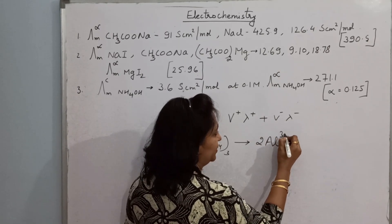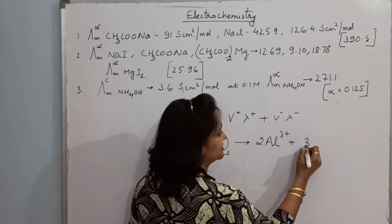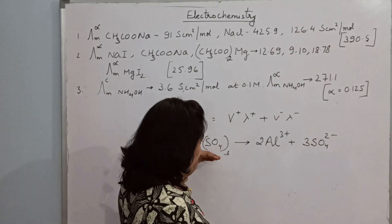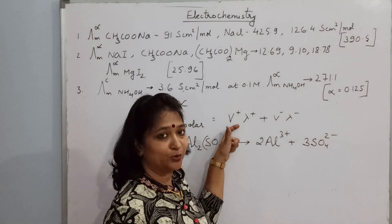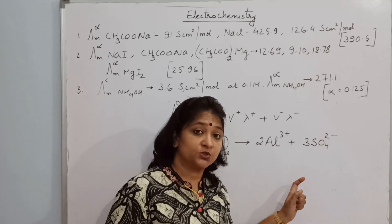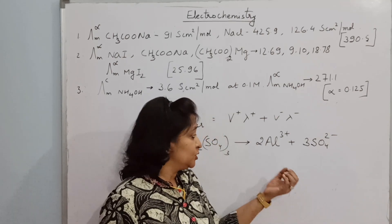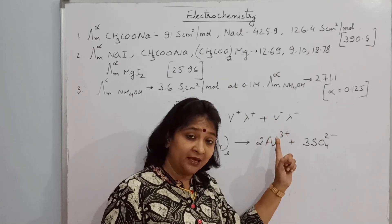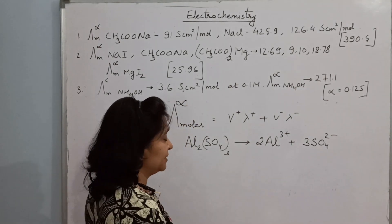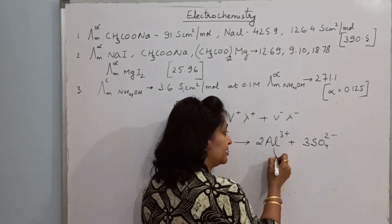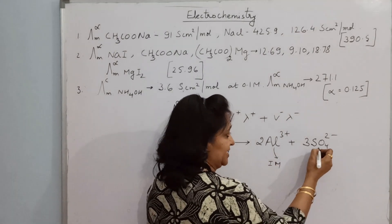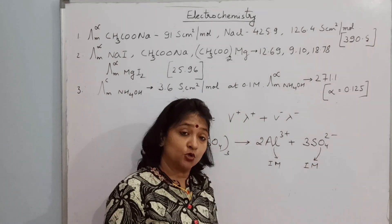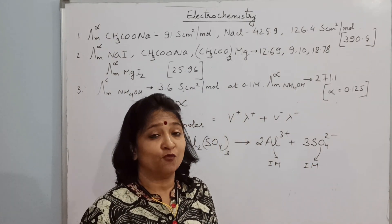Suppose we take aluminium sulfate — how will it dissociate? It gives 2 Al³⁺ plus 3 sulfate ions. So in this case, v⁺ = 2 (number of cations produced) and v⁻ = 3. λ⁺ is the individual ionic mobility of aluminium, and λ⁻ is the individual ionic mobility of sulfate. So λ⁺ and λ⁻ represent the ionic mobilities.